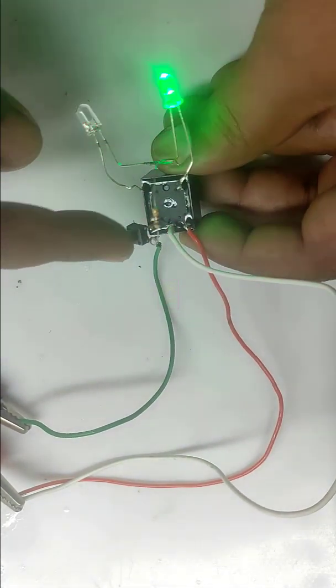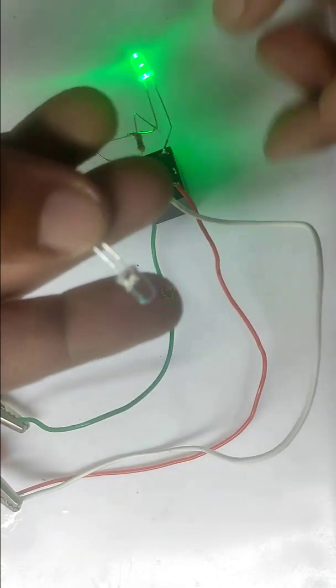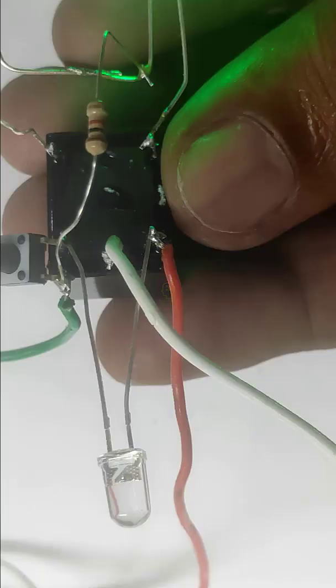Now we are going to connect an orange LED across the coil, which is in reverse polarity of the supply. The LED is connected in reverse polarity.